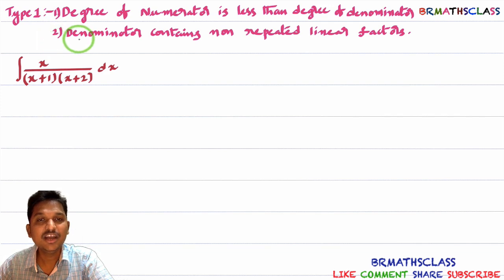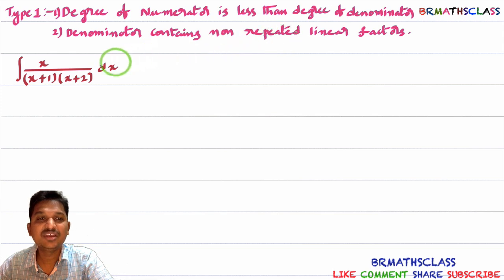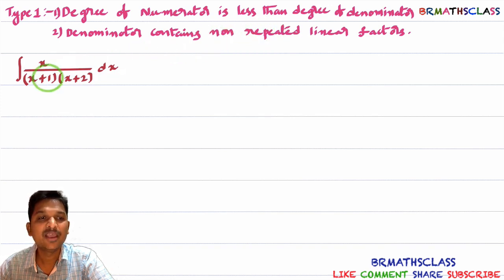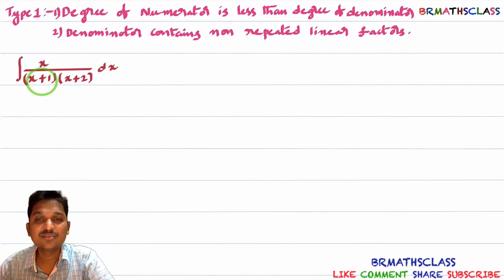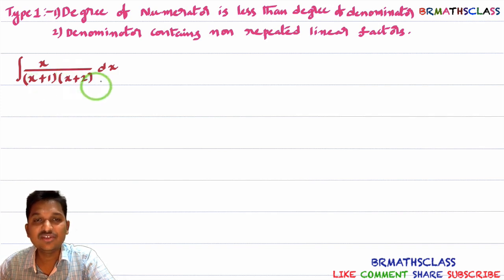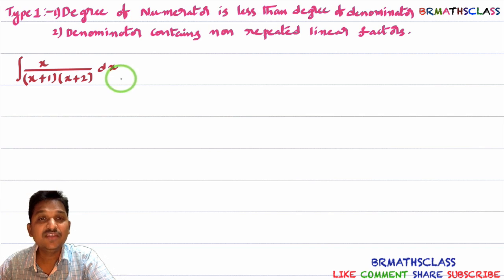The second condition is: the denominator contains non-repeated linear factors. Linear factors such as x+1, x-1, 2x+3 all have degree 1. Here, x+1 is a linear factor and is not repeated anywhere in the denominator — so it is a non-repeated linear factor. Similarly, x+2 has degree 1 and is not repeated, so it is also a non-repeated linear factor. Therefore, we identify this problem as Type 1.